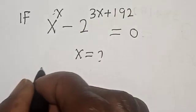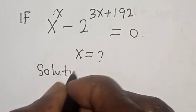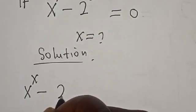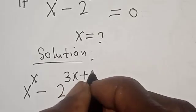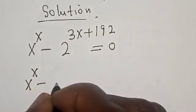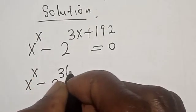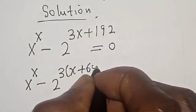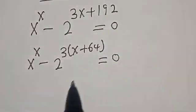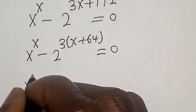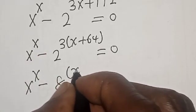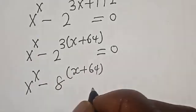Let's start with the solution. We have s raised to power s, minus 2 raised to power 3 into (s + 64), is equal to 0. Because 3 times s is 3s and 3 times 64 is 192. Now, s raised to power s, minus 2 raised to power 3, which is 8, into (s + 64) is equal to 0.